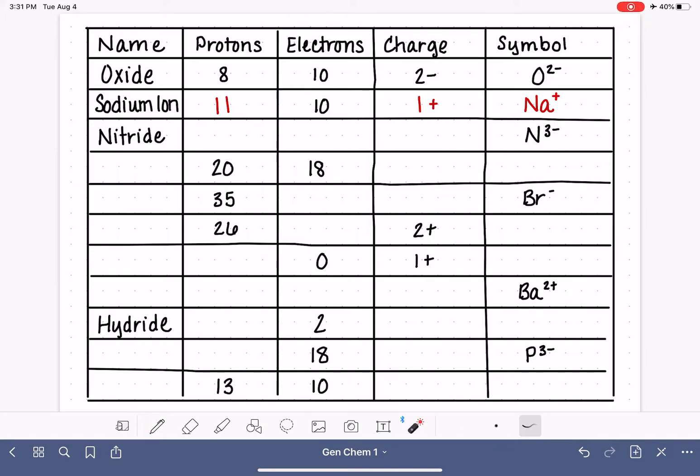For our next example, we have nitride. The symbol is N3 minus. We know that this is a negatively charged ion because the ending is in ide, and also because we can see it right here, the charge on this ion is 3 minus.